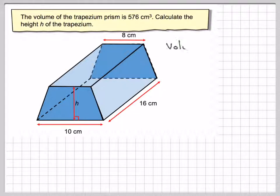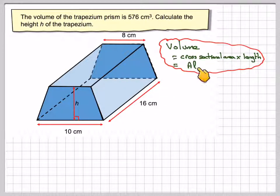Right, we know that the volume of a prism is the cross-section area times the length. So it's going to be the area of this trapezium times this length here. We write this sometimes as A times L.